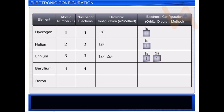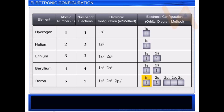Beryllium has four electrons. Two electrons fill the 1s orbital, and the remaining two fill the 2s orbital. Boron has five electrons. The first two electrons fill the 1s orbital, the next two fill the 2s orbital, and the fifth electron occupies the 2p orbital. The fifth electron may occupy any one of the three 2p orbitals — 2px, 2py, or 2pz — because all have the same energy.